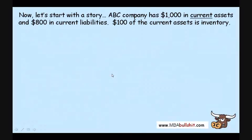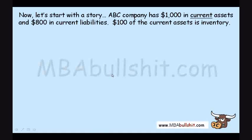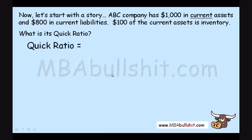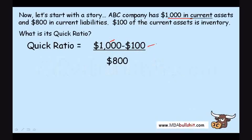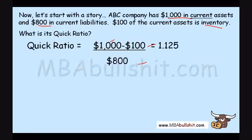Let's say that ABC Company has $1,000 in current assets and $800 in current liabilities. $100 of the current assets is in inventory. The quick ratio is very simple: $1,000 minus $100 (the inventory), all over $800 (the current liabilities). We come up with a quick ratio of 1.125.